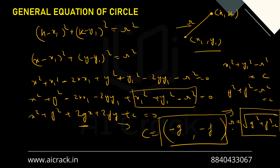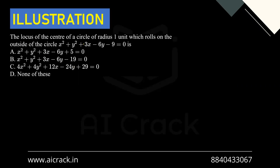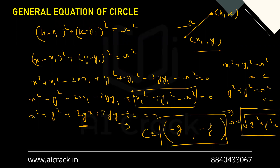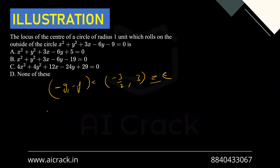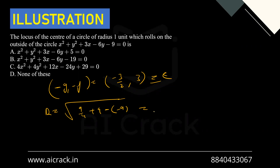Now let's look at a question: the locus of the center of a circle of radius 1 unit which rolls on the outside of the circle x² + y² + 3x − 6y − 9 = 0. Using the formulas, center = (−g, −f) = (−3/2, 3), and radius = √(g² + f² − c) = √(9/4 + 9 + 9) = √(81/4) = 9/2.